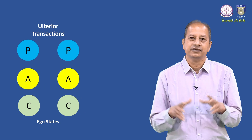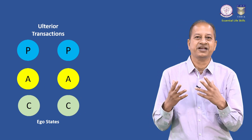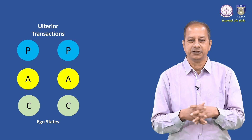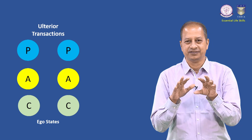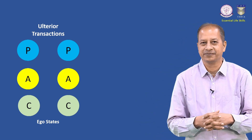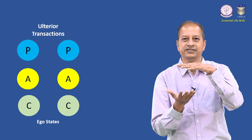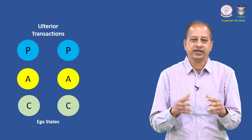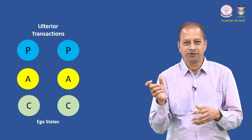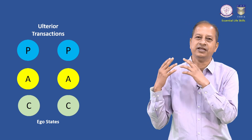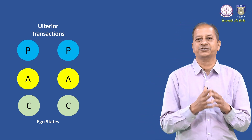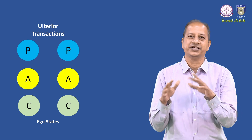The next type is ulterior transaction. This is very complex because multiple ego states come into play. Two messages are simultaneously conveyed: one is a social message and the other is a psychological message. The social message is on the surface, and below it is the psychological message. It appears as though we are saying one thing, but actually something else is being conveyed. Such transactions are generally left to the intelligence of the receiver to decode and understand.